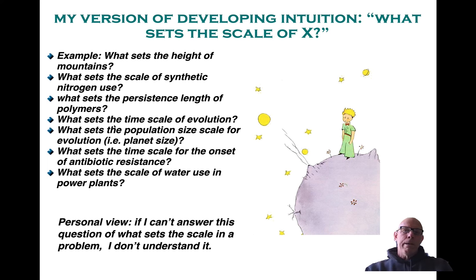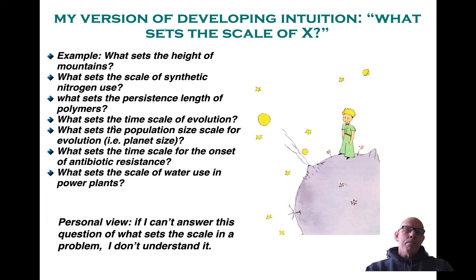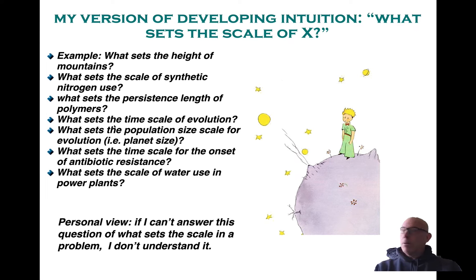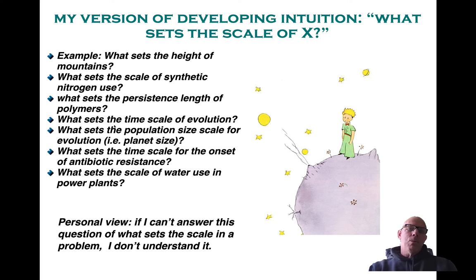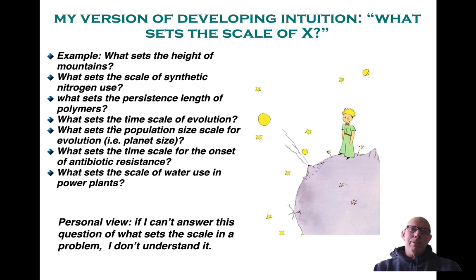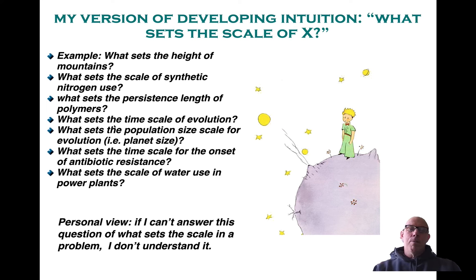Another piece of the course philosophy: if I can't answer the question 'what sets the scale of a given thing,' that means I don't understand that thing. If I look back at the mountains surrounding Los Angeles, I ask what sets their height — and what sets the heights of mountains on Mars. What sets the scale of synthetic nitrogen use on planet Earth? That's a great question related to what I call the Haber number — a dimensionless ratio comparing naturally fixed nitrogen to synthetic nitrogen. What sets the persistence length of polymers? What sets the timescale for evolution?